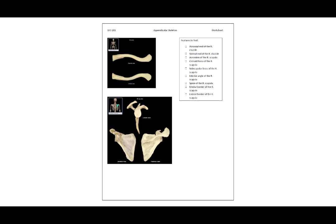For the pectoral girdle, we'll use the clavicle and the scapula. The acromial end of the right clavicle would be this region, where the sternal end is this flat region.